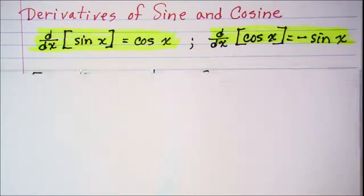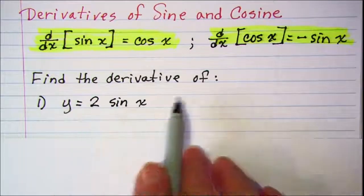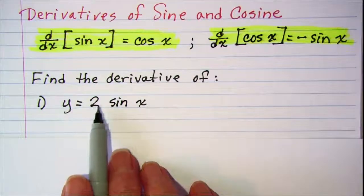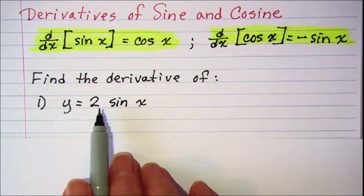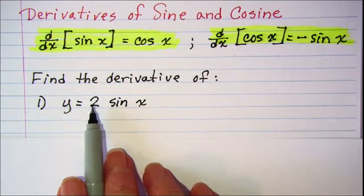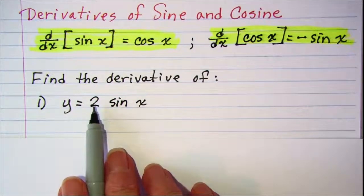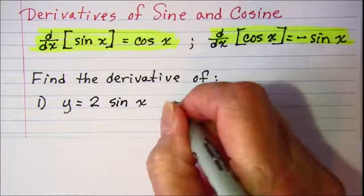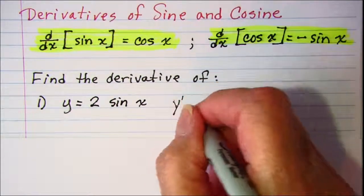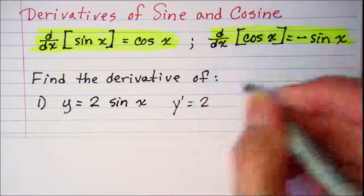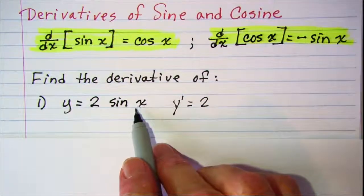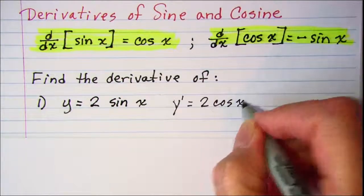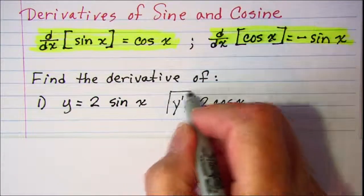Let's do a few examples. Find the derivative of y equals 2 sine x. We can use our constant multiple rule that says this is just going to be 2 multiplied by the derivative of sine x. So y prime is equal to 2 times the derivative of sine x is cosine x, and we're finished.